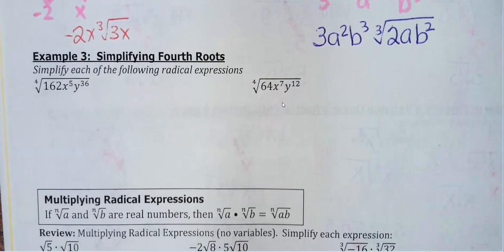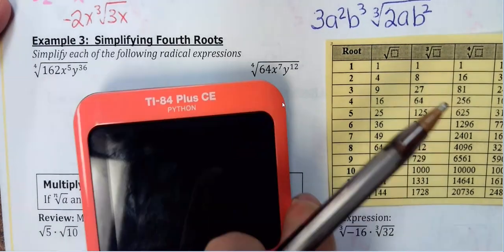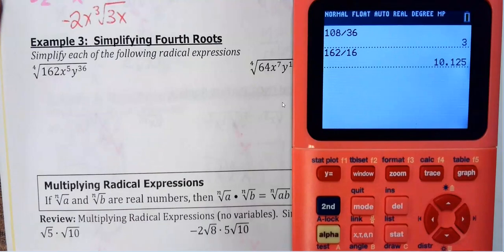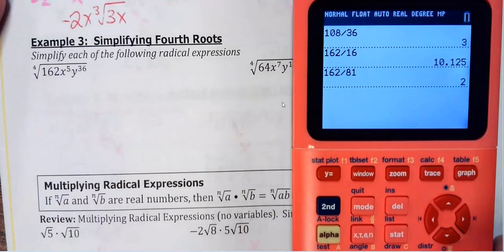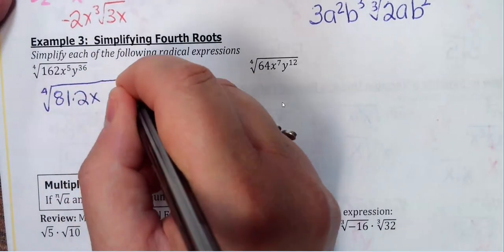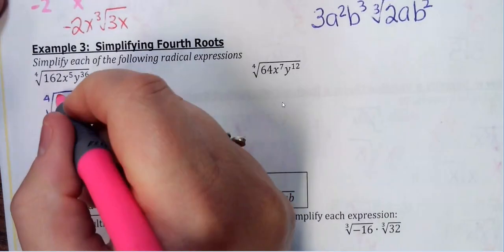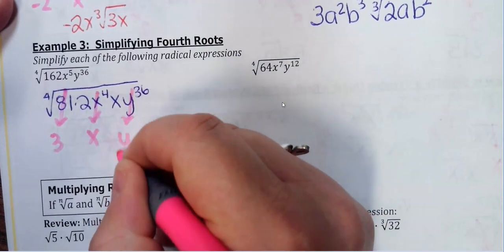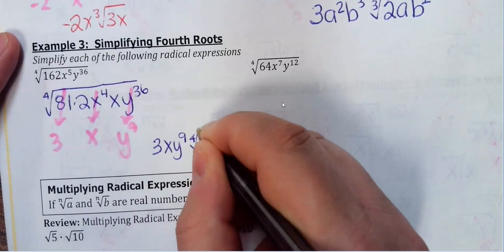Now for fourth root examples. For ∜(162x⁵y³⁶): looking at the list of perfect fourths, the only things to check are 16 and 81 since beyond that numbers are too big. 162 = 81×2. I need my exponent divisible by 4, so I break x⁵ as x⁴·x, and y³⁶ is divisible by 4 so I leave it alone. Fourth root of 81 comes out as 3, x⁴ comes out as x, y³⁶ comes out as y⁹. The answer is 3xy⁹·∜(2x).